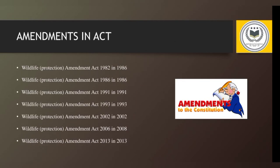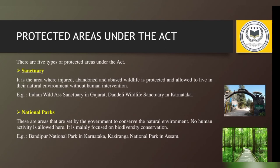The amendments made to the act are: Wildlife Amendment Act 1982, Wildlife Amendment Act 1986, Wildlife Amendment Act 1991, Wildlife Amendment Act 1993, Wildlife Amendment Act 2002, Wildlife Amendment Act 2006, and Wildlife Amendment Act 2013.